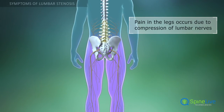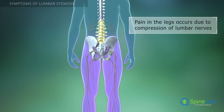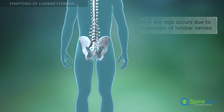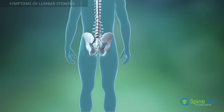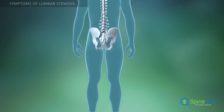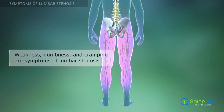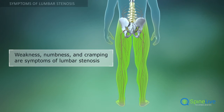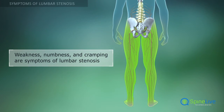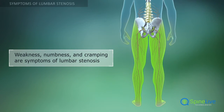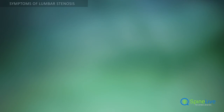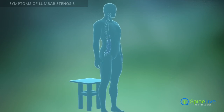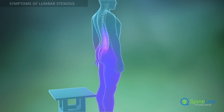The nerves extend into the legs through the lumbar portion of the spine. Besides pain, lumbar stenosis can cause weakness, numbness, and cramping in the buttocks, legs, or feet. These conditions arise due to nerve compression.